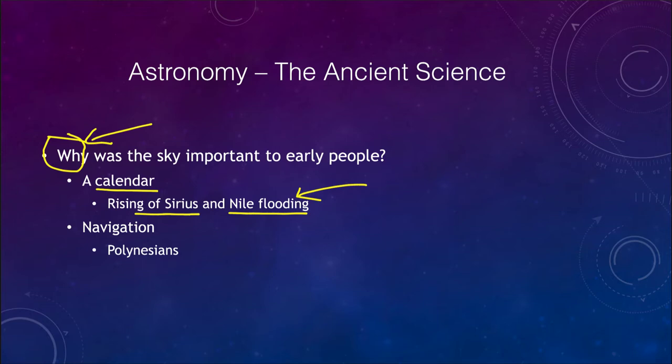Another thing that was used is for navigation, and the Polynesians were big with this. Especially because when you look at the area out there in the South Pacific, it's a lot of islands. So you have to be able to navigate from island to island. It's much easier to walk around on land than it is to travel between the islands. Because once you're out of sight of an island, all you have is ocean around you. So it was very important to be able to know the patterns of the stars and use that to guide you.